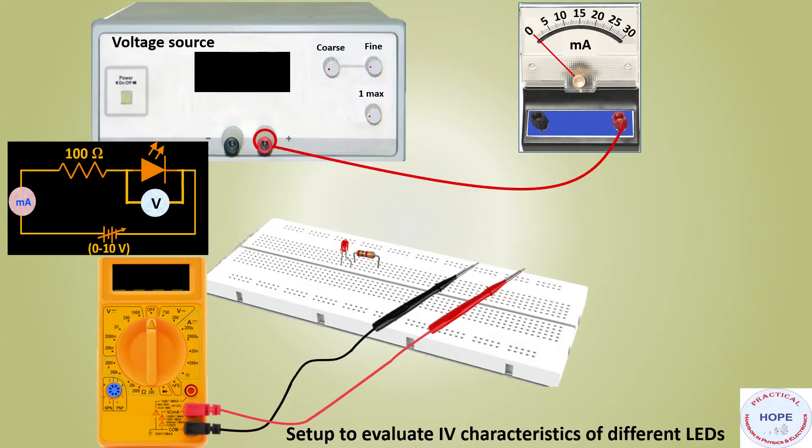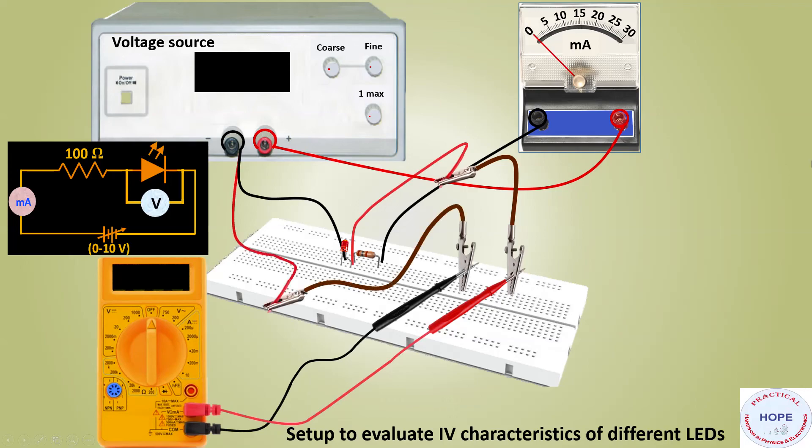The positive terminal of the power supply is connected to positive terminal of the milliammeter. The negative terminal of the milliammeter is connected to one end of the resistor. Other end of the resistor is connected to p side of the LED. The n side of the LED is connected to negative terminal of the power supply. So next, multimeter needs to be connected in parallel to LED. The positive terminal of the multimeter is connected to positive terminal of the LED and negative terminal of the multimeter is connected to negative of the LED or negative of the power supply. So the circuit is complete.